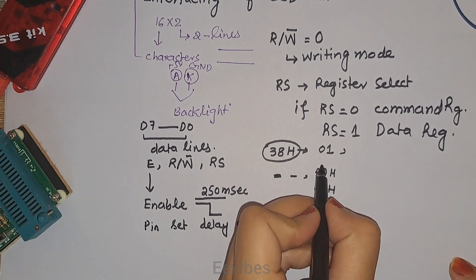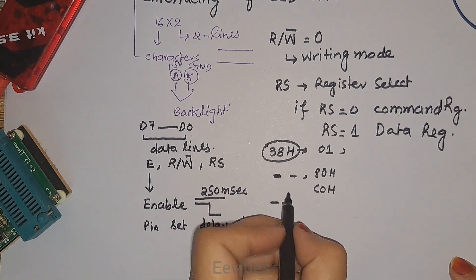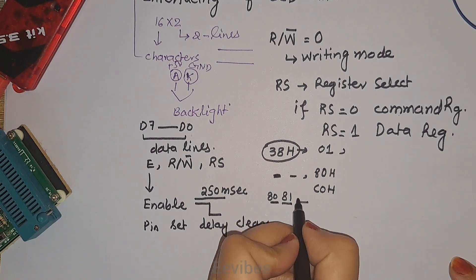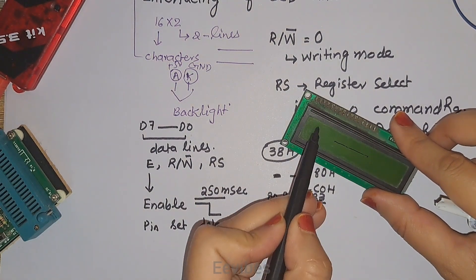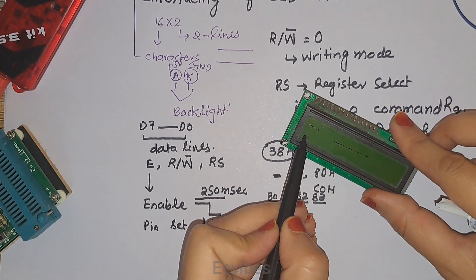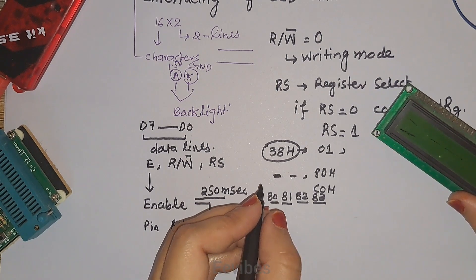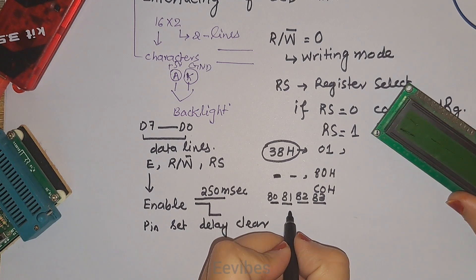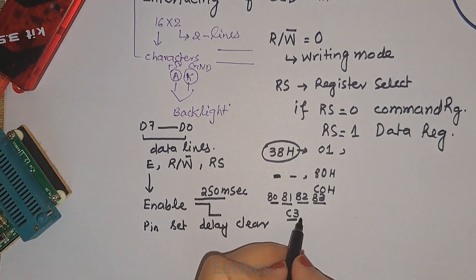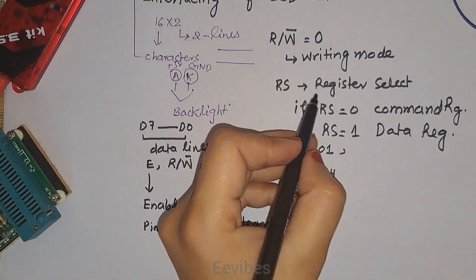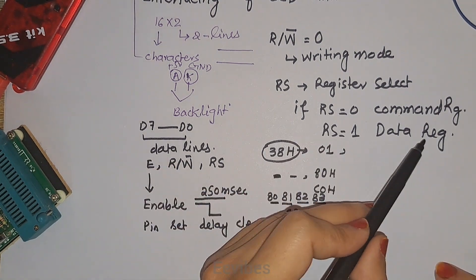If you want to display a character at the beginning of the first line, issue command 0x80. For the second position issue 0x81, then 0x82, 0x83, and so on, depending on where you want to display the character. For the second line, starting from 0xC0, 0xC1, 0xC2, 0xC3 — so if you want to display data in the second row at the fourth position, you issue 0xC3. This was all about the commands issued for configuring the LCD.